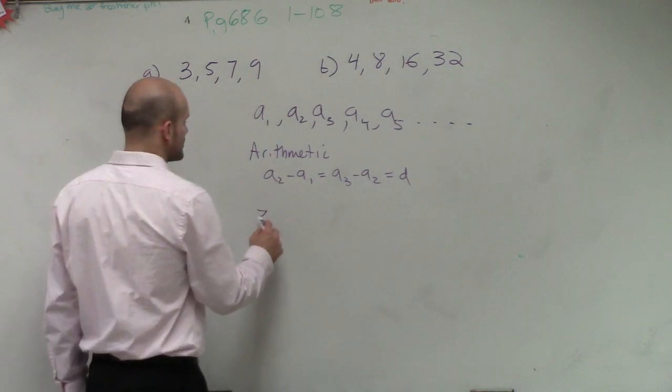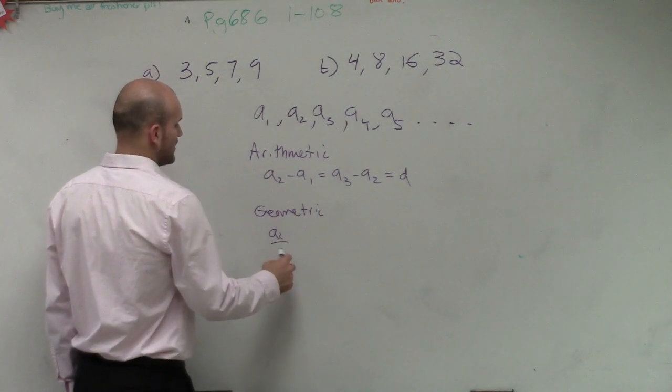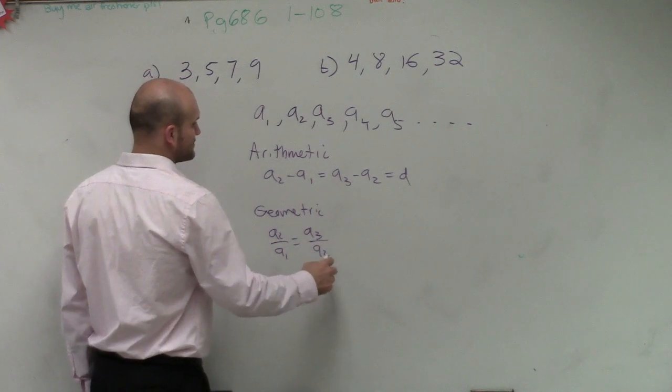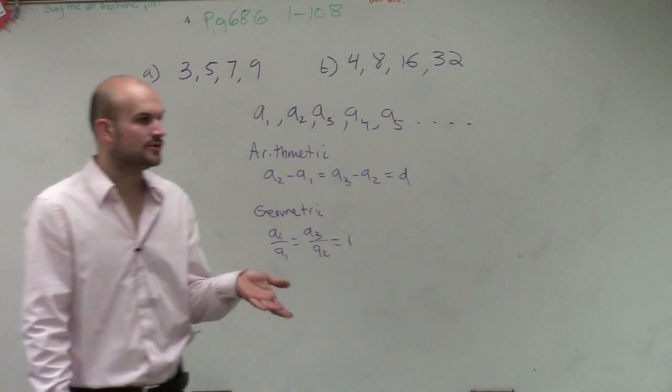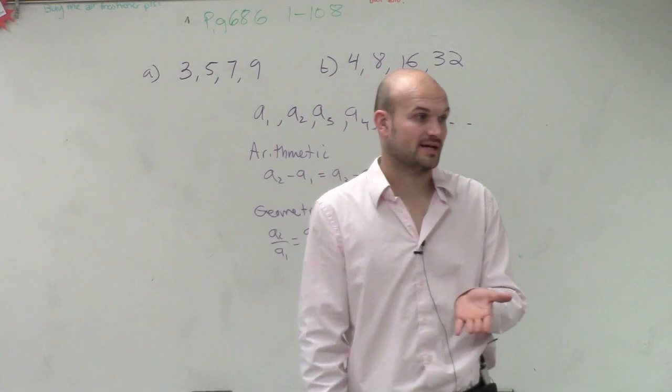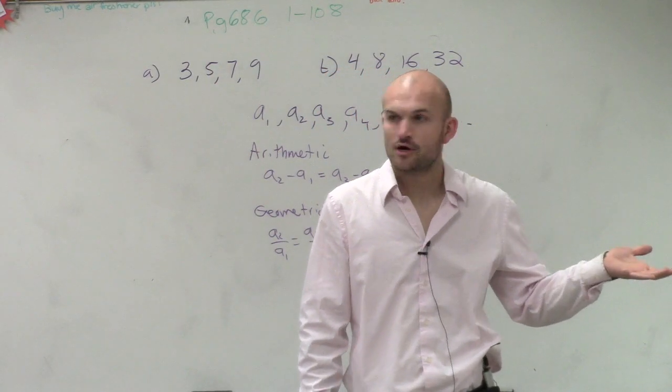It's geometric if we can divide these by doing a sub 2 over a sub 1 is equal to a sub 3 over a sub 2, which we call the ratio. So all I'm simply going to do is first determine if it's arithmetic. Then I determine if it's geometric. And if it's neither of those, then it's neither.